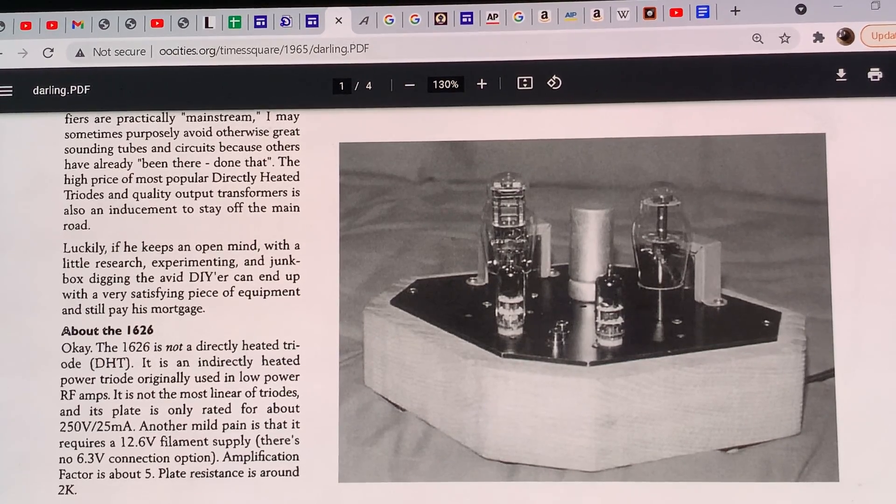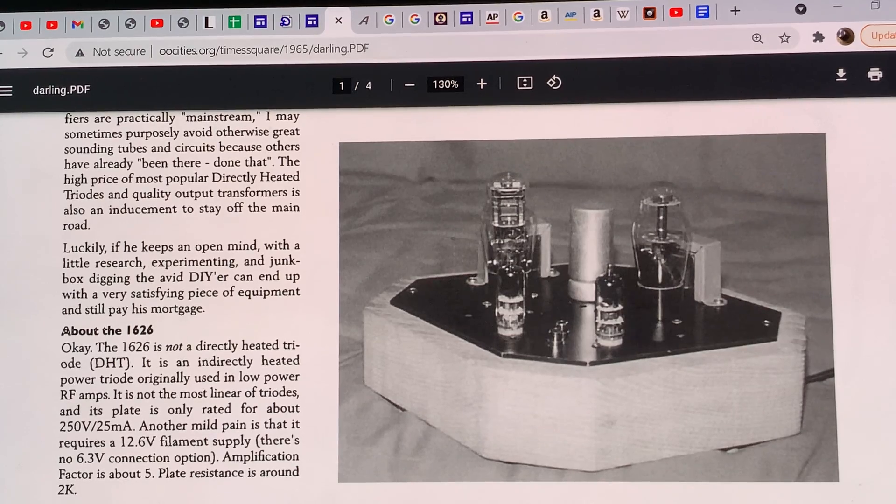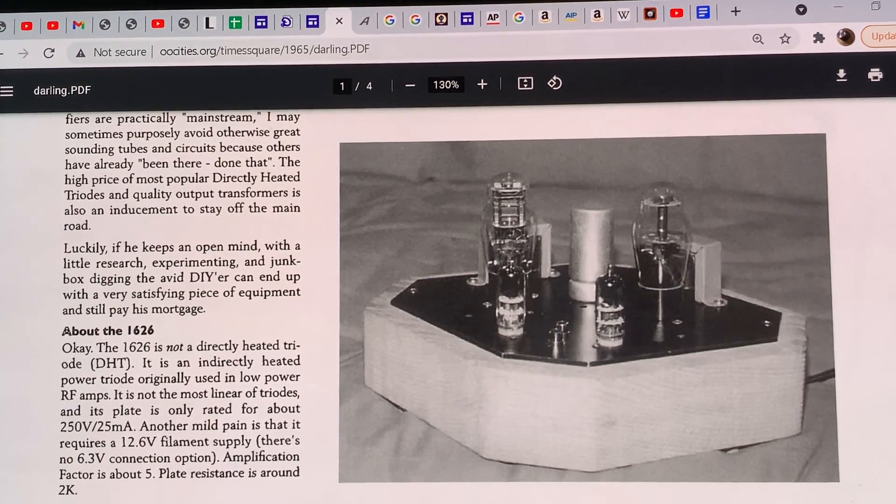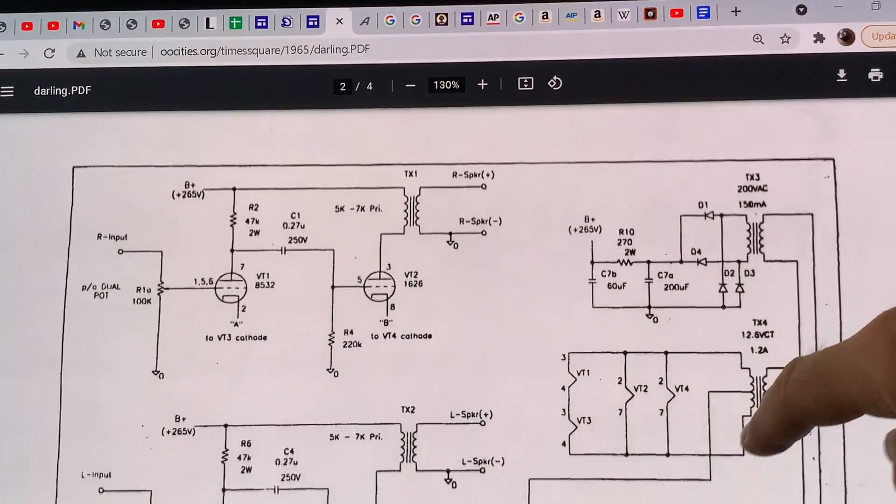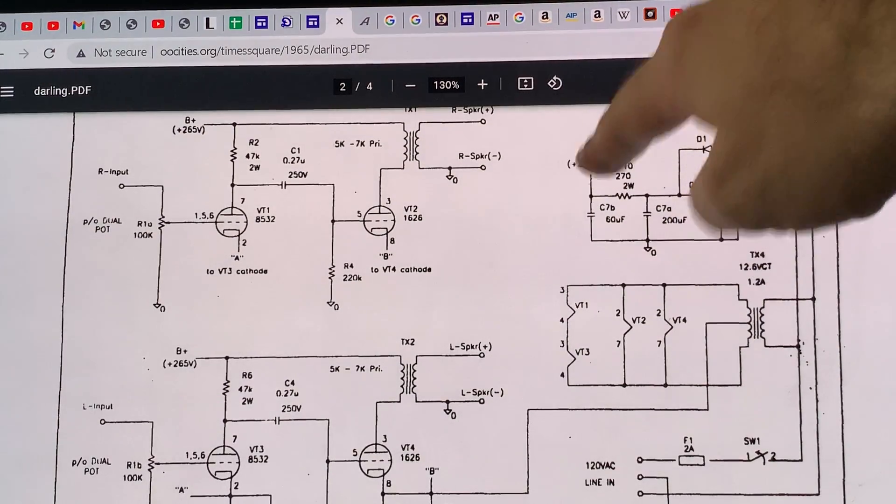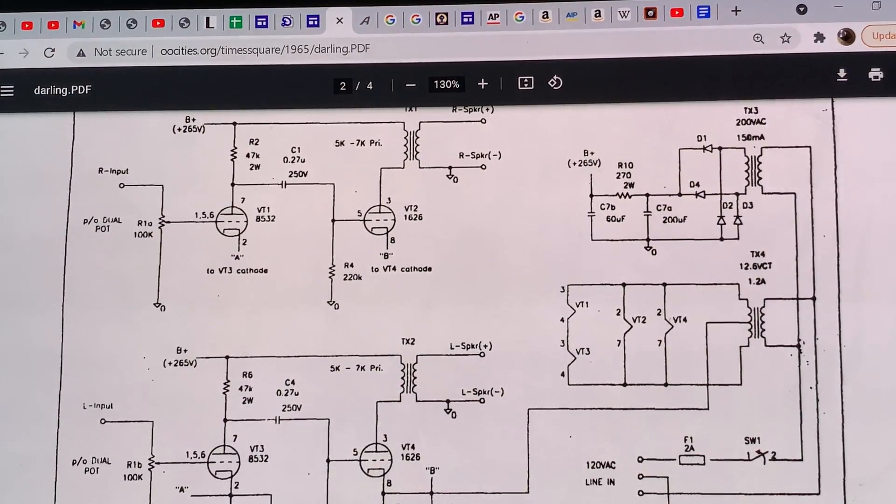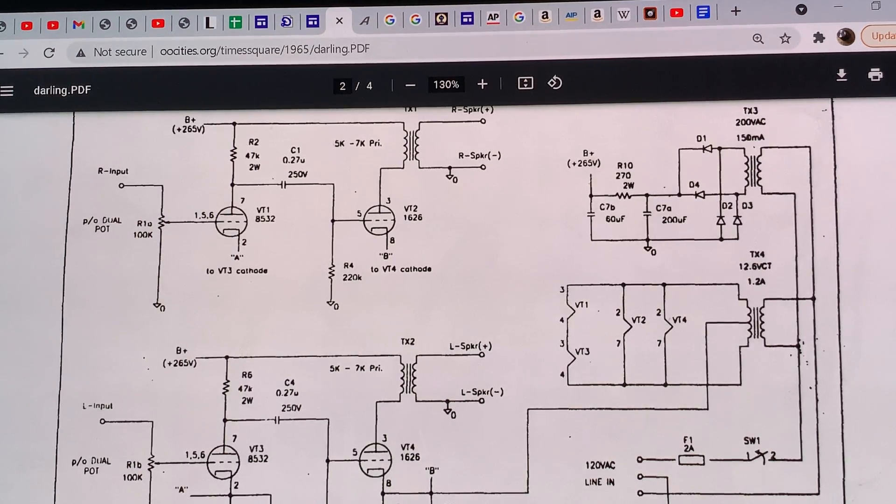Rectification is solid state, and it's capacitor coupled, so the voltages are not that high. The plate voltage is, let's see, let's scroll down to the schematics, 265 volts, which is pretty safe I would say. It can still give you a nasty jolt,